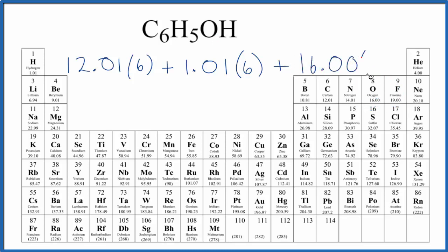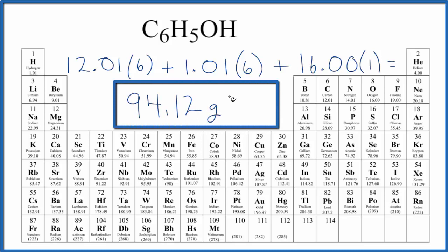What that means is if I had one mole of phenol, it would have a mass of 94.12 grams. If I had 94.12 grams, that would be one mole of phenol, C6H5OH.